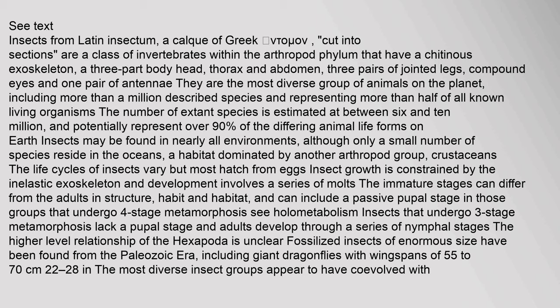They are the most diverse group of animals on the planet, including more than a million described species and representing more than half of all known living organisms. The number of extant species is estimated at between 6 and 10 million, and potentially represent over 90% of the differing animal life forms on Earth. Insects may be found in nearly all environments, although only a small number of species reside in the oceans, a habitat dominated by crustaceans.